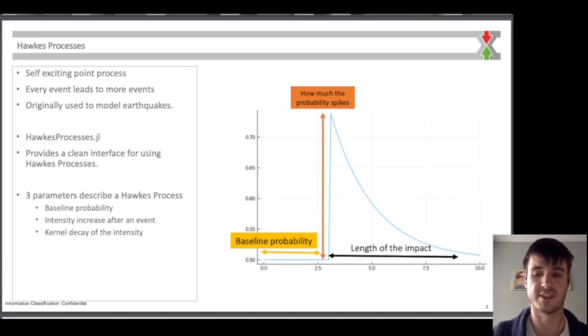Originally used to model earthquakes, Hawkes processes have since seen applications in other domains. You can use my HawkesProcesses.jl package, available in the general repository, which provides a clean interface for using Hawkes processes.